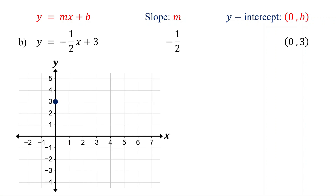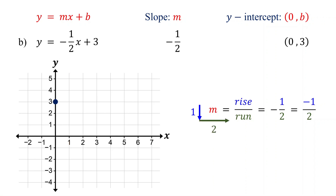Next, plot another point using the slope. Remember, slope is rise over run, and here it is negative 1/2. Place the negative sign in the numerator. This doesn't change the value of the slope, since they are equivalent fractions. So the rise is 1 unit down, and the run is 2 units to the right. Now, starting from the y-intercept, move down 1 unit. Then move to the right 2 units and plot the second point.